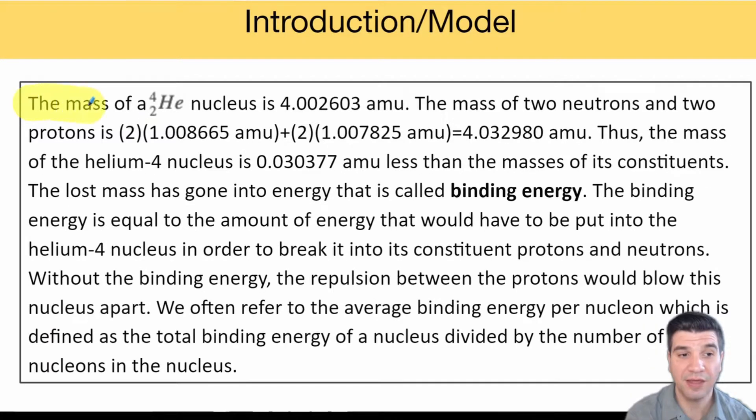In this example they give you an atom of helium-4 and tell you that the mass is 4.002603 amu (atomic mass units). If you were to break that down into its constituent parts, the two neutrons and the two protons, you would see that by adding up the mass of the neutrons and protons you would get a total atomic mass of 4.032980.